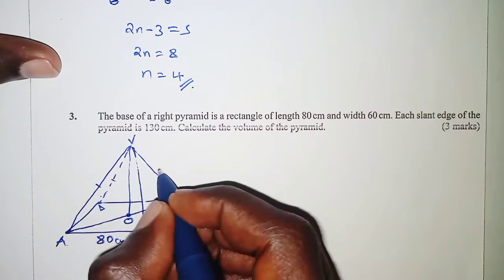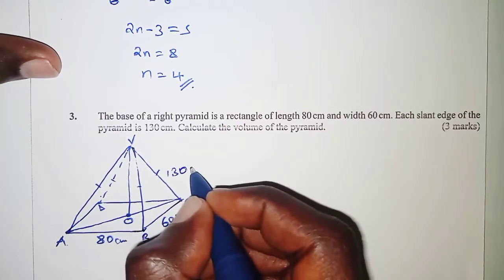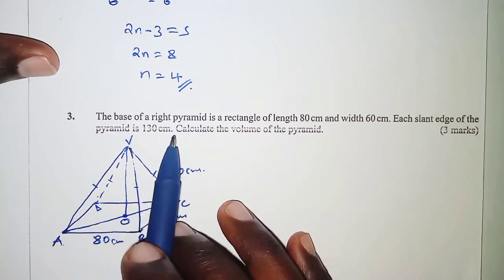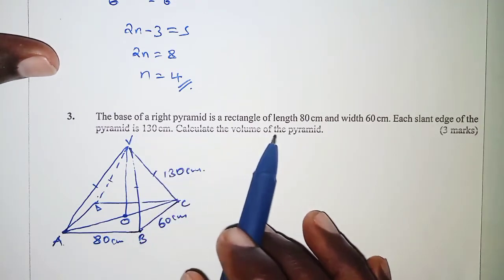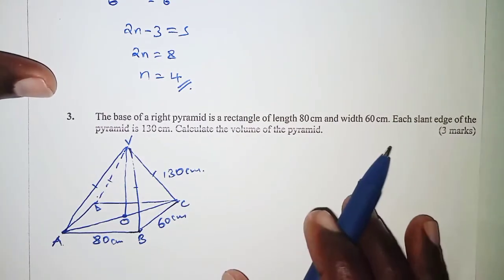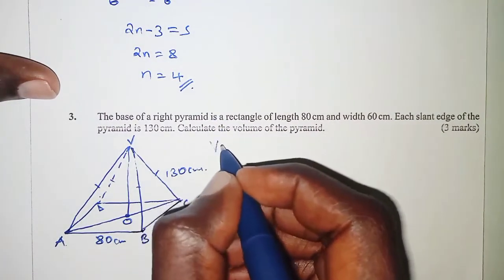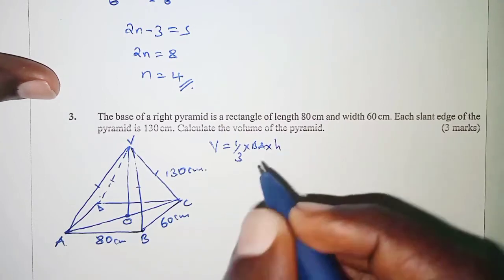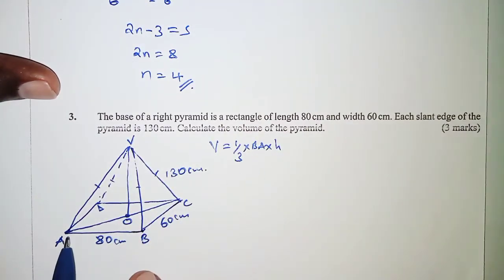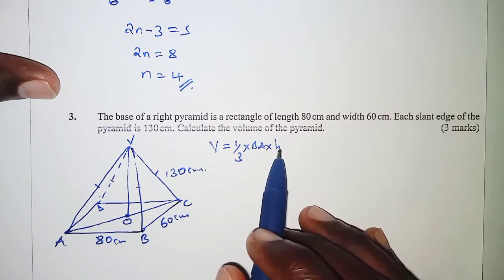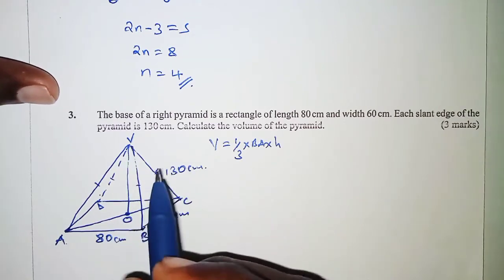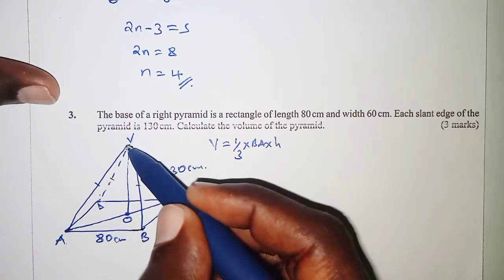We are told the base has dimensions 80 cm by 60 cm, and the slant heights are all equal, each being 130 cm. We are asked to calculate the volume of the pyramid. The volume formula is one third times the base area times the height. We can get the base area, but we still need the vertical height VO.